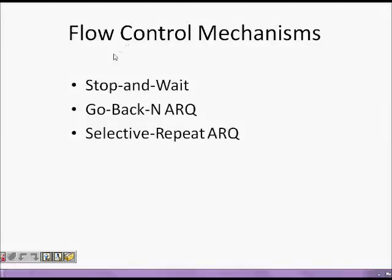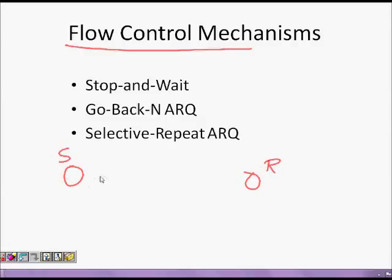In this lecture we are going to learn about flow control mechanism in the internet. What is flow control? If the sender is sending data at a very high rate such that the receiver cannot handle it, there must be some mechanism by which the receiver can tell the sender to wait. One of the most simple mechanisms for flow control is stop and wait.